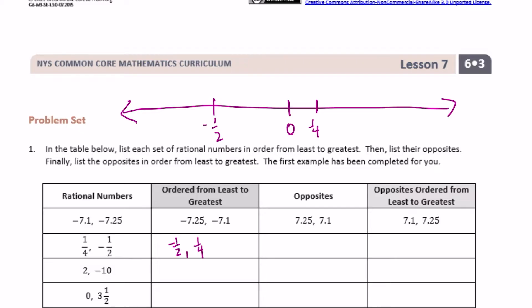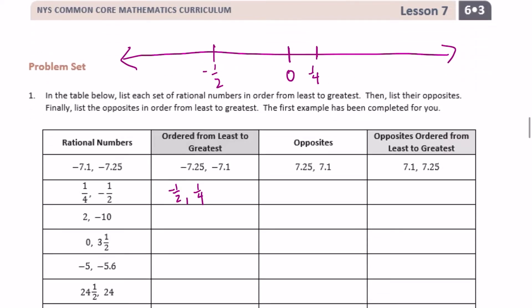So if we list those in order from least to greatest, then find their opposites: the opposite of negative one-half would be one-half, and the opposite of one-fourth would be negative one-fourth. On our number line, one-half would be over here and negative one-fourth would be about right there. So now their order has flipped — in order from least to greatest, we'd have negative one-fourth and then one-half.